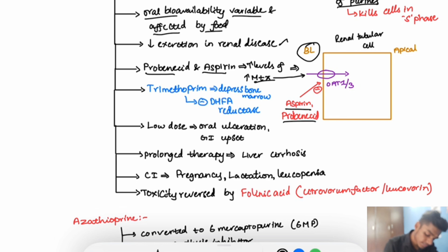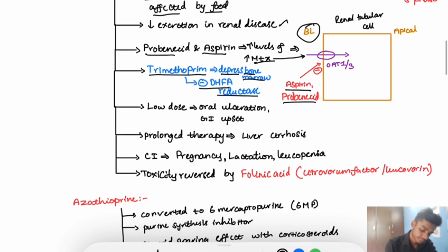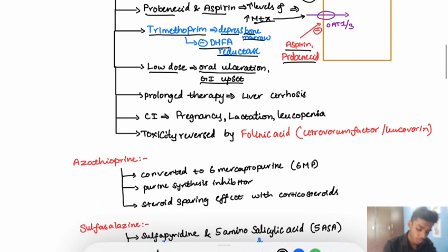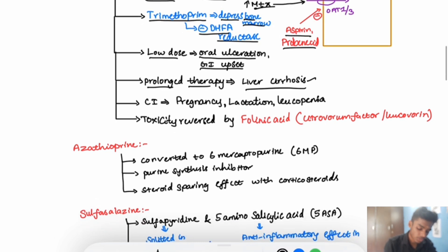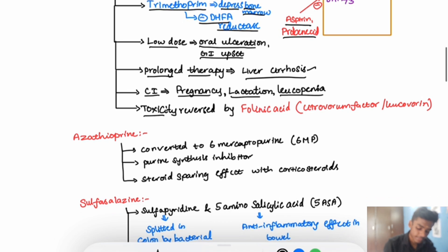There is another drug interaction with trimethoprim, which depresses bone marrow and also inhibits dihydrofolate reductase. In low doses, adverse effects of methotrexate are oral ulceration and GI disturbances. In prolonged therapy, there is liver cirrhosis. It is contraindicated in pregnancy, lactation, and leukopenia. Its toxicity is reversed by folinic acid, also known as citrovorum factor or leucovorin.